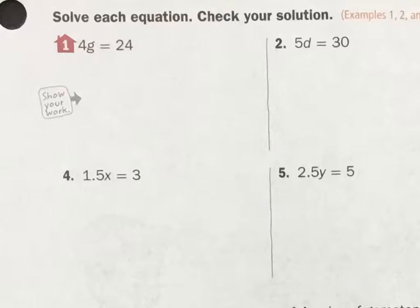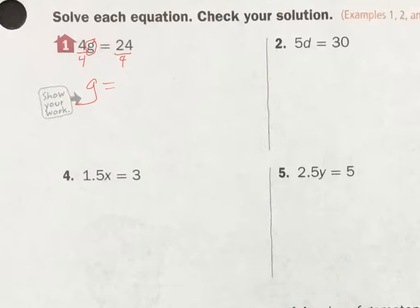The first thing I do is circle my variable — that's what I'm going to get all by itself. I see what's going on to it: it's 4 times g, so I have to divide it by 4. And I've got to do the same to the other side. 4 divided by 4 is 1, so it leaves me with g equals 24 divided by 4, which is 6.